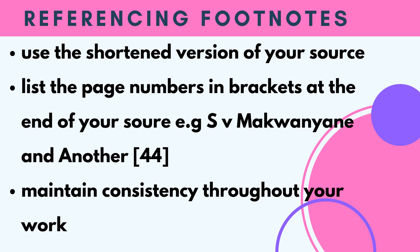Now that we've shown you how to do the footnotes, here's a brief summary of how you should reference them. In the footnotes section, use the shortened version of your source, as shown in the examples with the case and the book. Always include page numbers in brackets at the end of your source — for example, S v Makwanyane and Another (44) — to indicate the page where you got the information. Lastly, make sure you maintain consistency throughout your work, referencing the same source the same way every time.